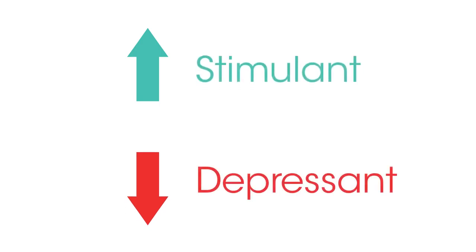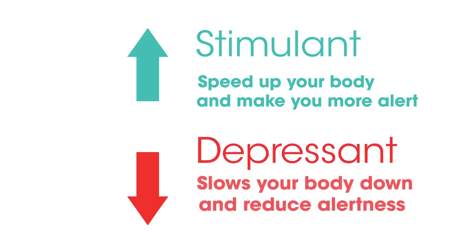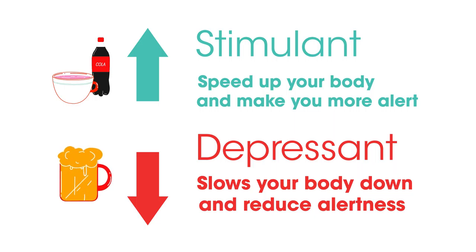Stimulants are substances that keep the body awake and alert and so may reduce the body's reaction times. Depressants are substances that reduce the level of alertness and so lengthen the response times. For example, caffeine is a stimulant and alcohol is a depressant.